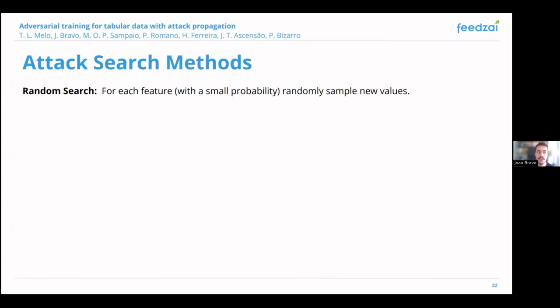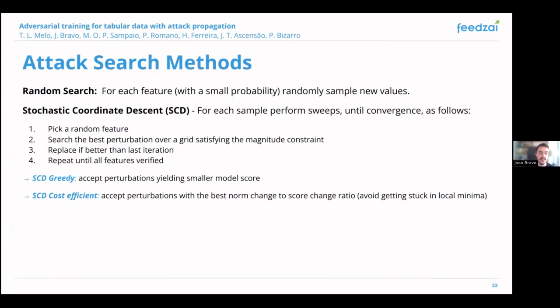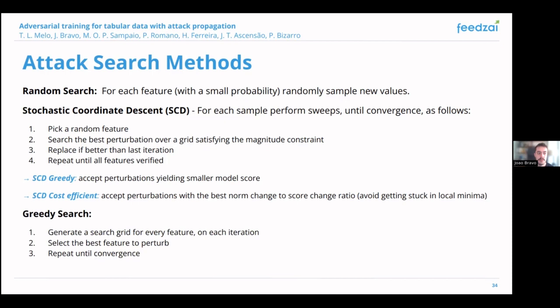For searching for the best perturbations we consider a number of discrete optimization algorithms. The simplest is random search, where we sample a random perturbation of each type and use a Bernoulli random variable to decide whether to apply it. The second method is stochastic coordinate descent, where we pick a type of perturbation at random selecting the best perturbation of that type satisfying a cost constraint — in a greedy variant purely by model score, and in another variant by the ratio of score improvement to cost increase, to avoid quickly hitting the norm constraint. The third method is a greedy heuristic evaluating the best perturbation of each type per iteration, selecting the one that reduces the model score the most.